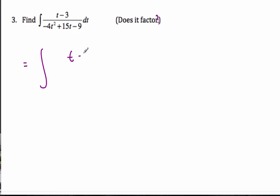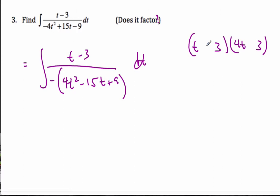This is t minus 3. If I factor this, let's pull out a negative sign first. So it's negative 4t squared minus 15t plus 9 dt. Working on this factoring thing, one of the tips I'm looking for is t minus 3. So if I know that one of them is probably going to be t and 4t...